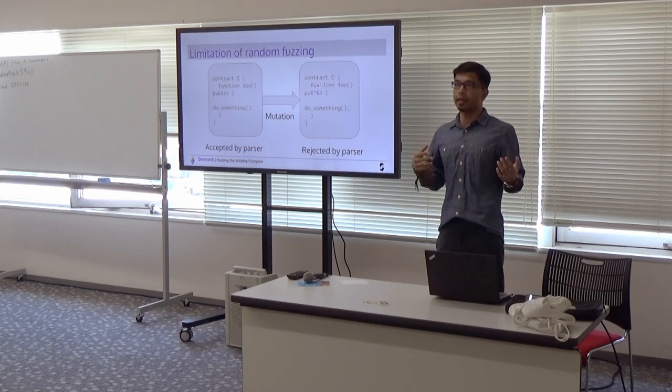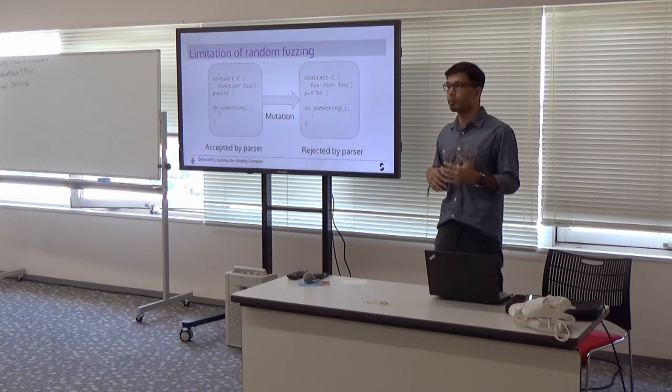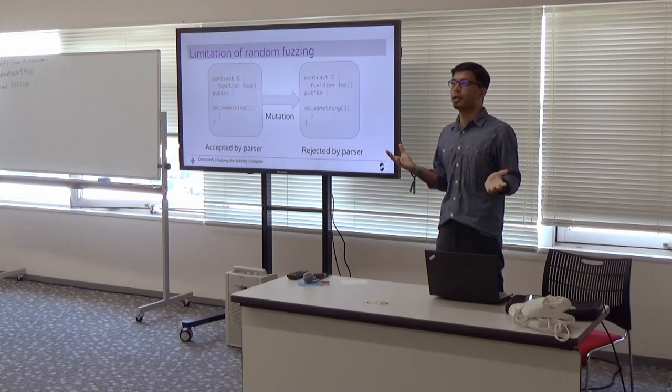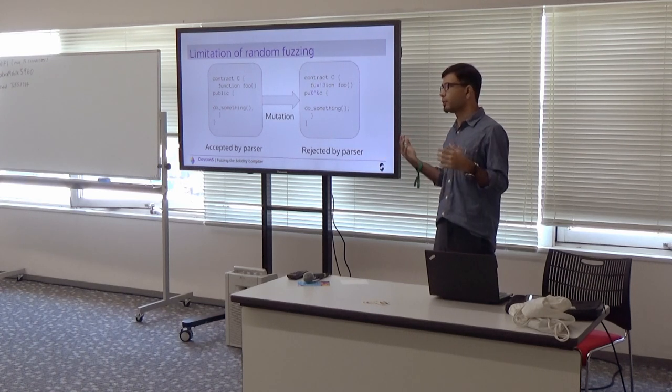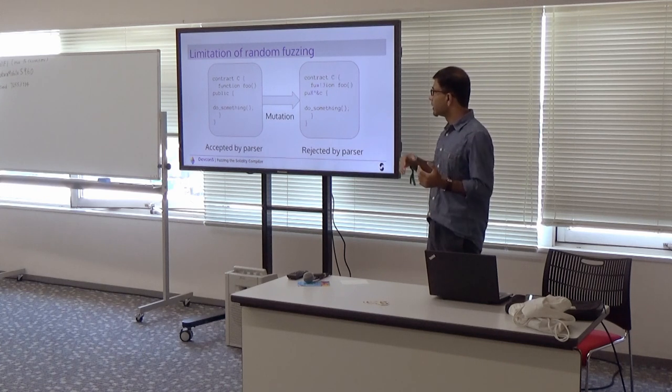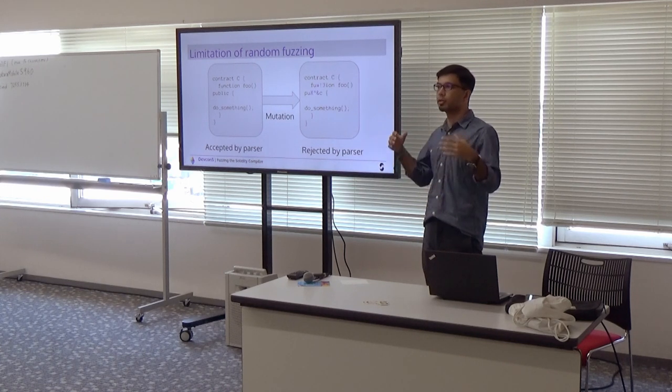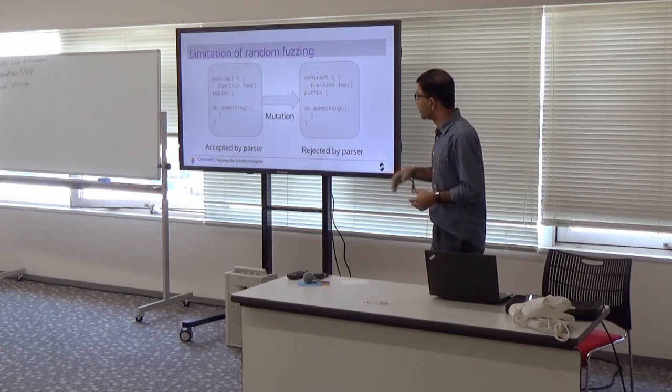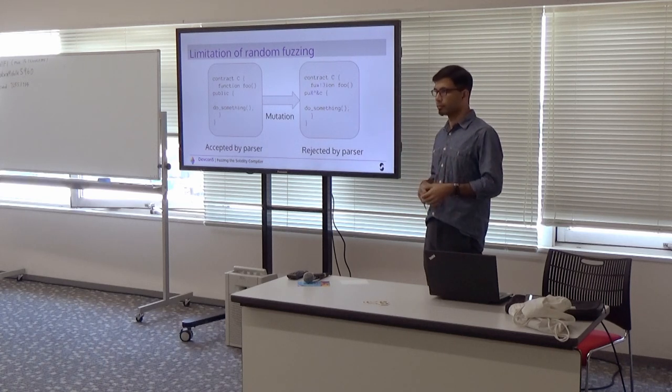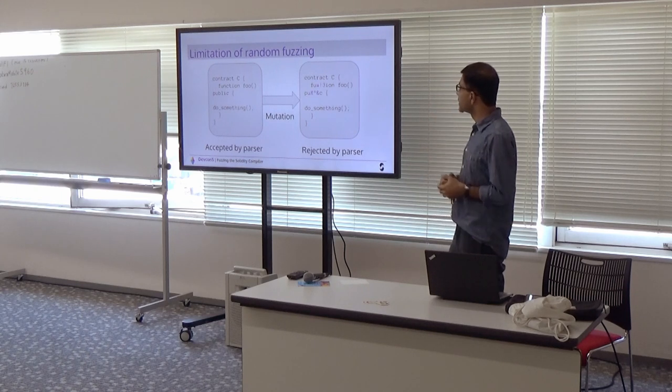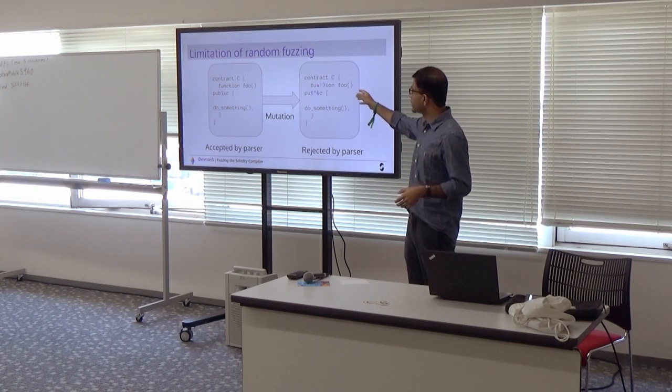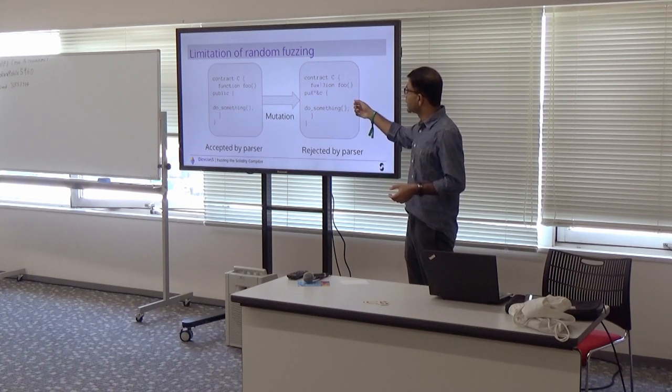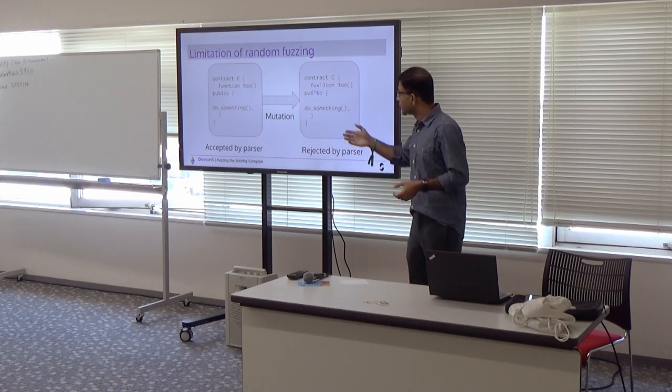And the fuzzer, let's assume that the fuzzer applies a mutation. A mutation is essentially any operation which tweaks bytes, adds bytes, or removes bytes from the byte stream on the left. The fuzzer sees the input as a stream of bytes and just tweaks bytes, adds, removes. It could create a mutation like the code shown on the right, which basically tweaks the keyword function and public.